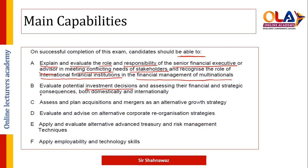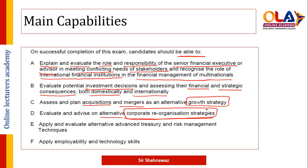Evaluate investment decisions and assess their financial and strategic consequences — both domestic and international. Assess and plan acquisitions and mergers as an alternate growth strategy. There are two growth strategies: organic and inorganic. Organic means expanding the business on your own terms; inorganic — the best route — is mergers and acquisitions. Evaluate and advise on alternate corporate reorganization strategies, where you restructure the business, alter shares, apply de-mergers, and so on.